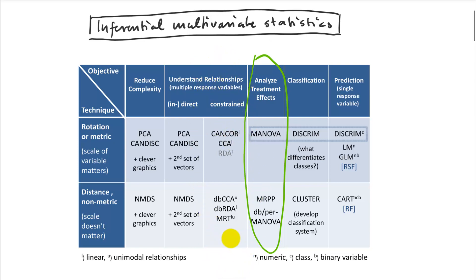This column is equivalent to a univariate correlation analysis, where we have one data set — for example, species communities — responding or correlating to another data set, which could be something like climate data or soil properties. So this inferential multivariate statistics section is what we'll cover next.